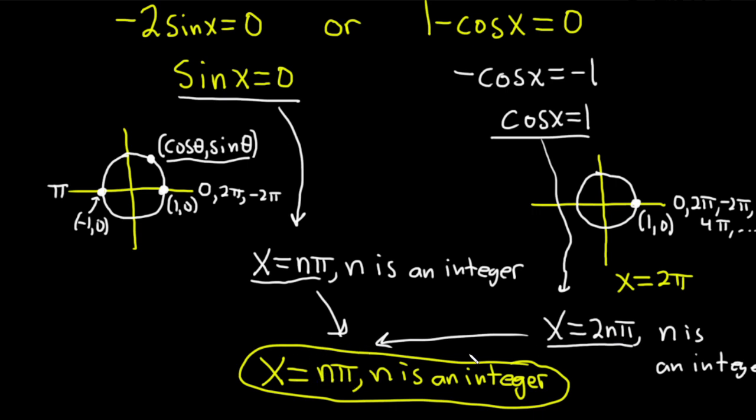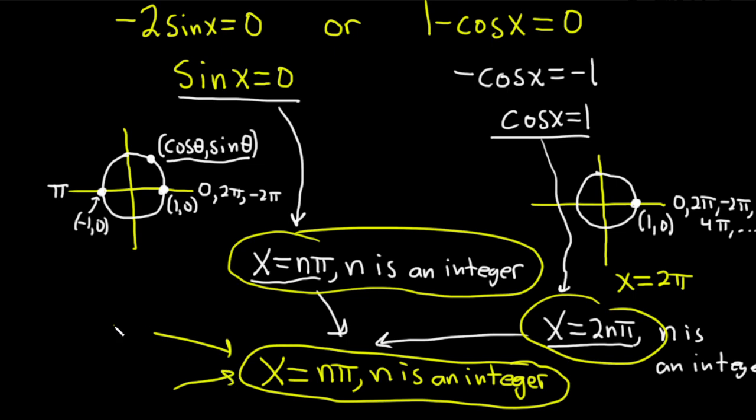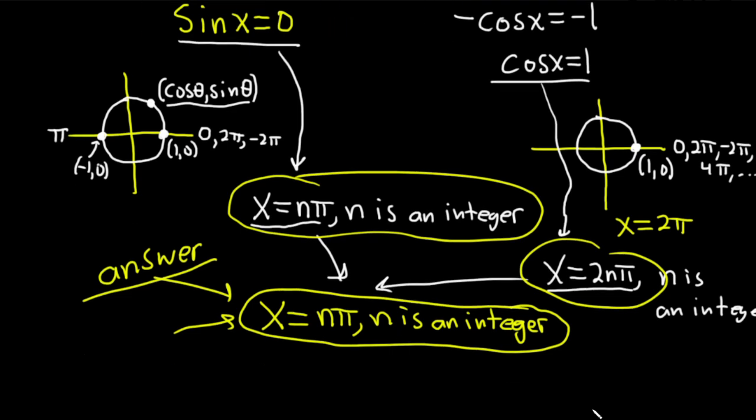So this x equals n pi takes into account both of these conditions here. The final answer, I'm just going to write answer so there's no confusion, is x equals n pi where n is an integer. Kind of a fun problem. I hope you've learned some mathematics in this video. I hope it's been helpful to someone in the world. Until next time, good luck. Take care.